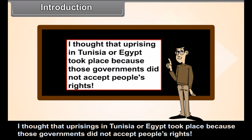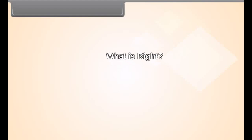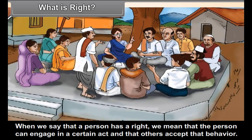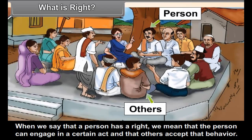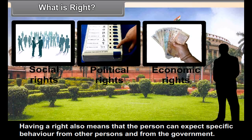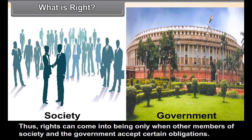I thought that uprisings in Tunisia or Egypt took place because those governments did not accept people's rights. What is a right? When we say that a person has a right, we mean that the person can engage in a certain act and that others accept that behavior. Having a right also means that the person can expect specific behavior from other persons and from the government. Thus, rights can come into being only when other members of society and the government accept certain obligations.